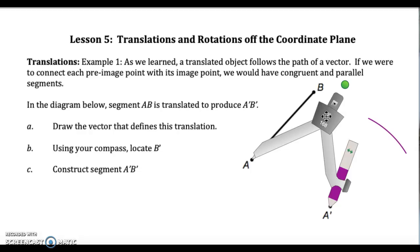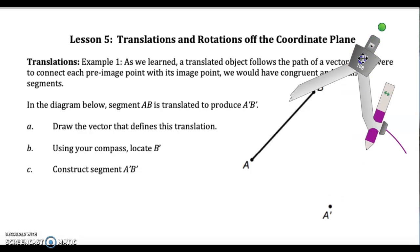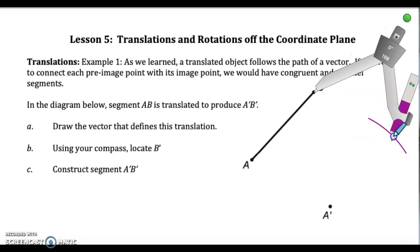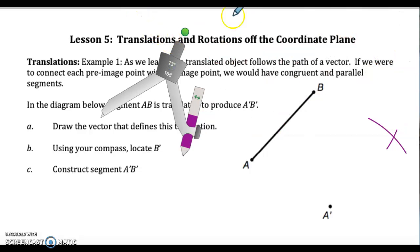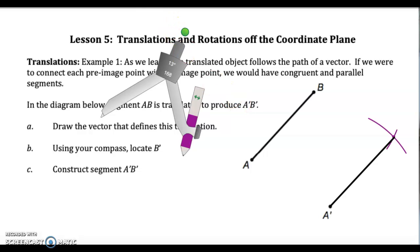So I'm measuring from A to A', and then I come up to B and draw an arc with the same radius. This is exactly where B' will be. So this right here is my B'. Make a little point there so you know that's what I'm connecting. So part A was to draw the vector that defines this translation. Part B, locate B' — right here. And construct segment A'B'. So there we go, all done.